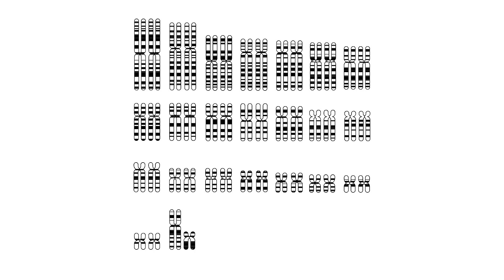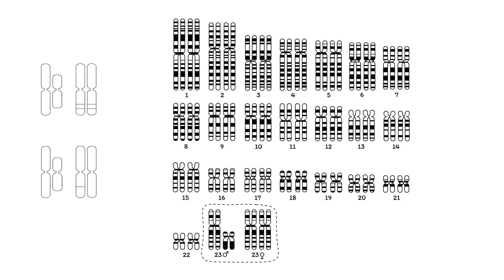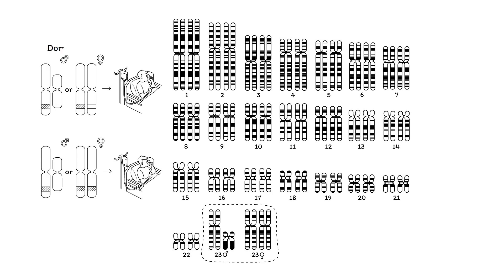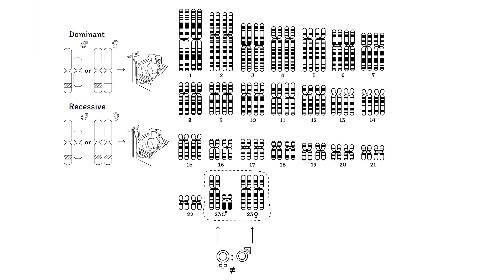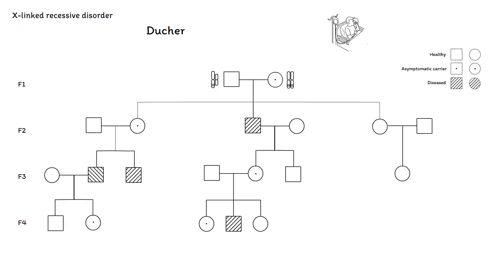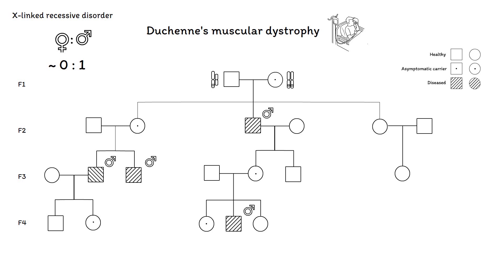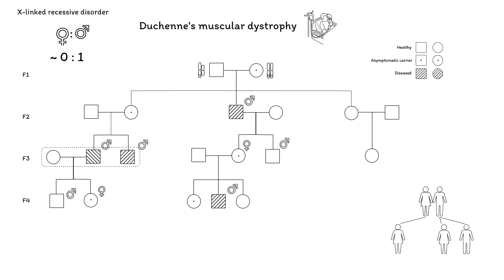Some disorders are caused by genetic variants on the sex chromosomes. These sex-linked disorders can be both dominant and recessive. In contrast to the autosomal disorders, sex-linked disorders do not equally affect males and females because of the difference in sex chromosomes. For X-linked recessive disorders such as Duchenne's muscular dystrophy, only males with a disease-causing variant are affected, as they only have one copy of the X chromosome. Furthermore, affected males never pass the disorder to their sons, while all daughters will be unaffected carriers. Therefore, a horizontal pattern may be visible in the family tree.